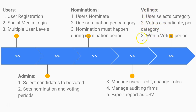Once the voting period begins, the system automatically opens up for voting. A user logs in, sees the categories, clicks on a category, and votes for a candidate. This voting must happen within the voting period — whether that's one week, one day, or even six hours. We'll add a calendar to monitor this.